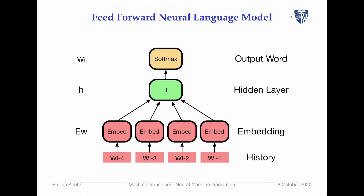Here was our feedforward neural network language model. The idea is to predict an output word given its history — the four preceding words — as input to the neural network. We first map these into embeddings via a one-hot vector passed to an embedding matrix, giving a typically 500-dimensional embedding, which we feed into a hidden layer with an activation function and then make an output word prediction.